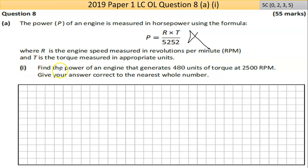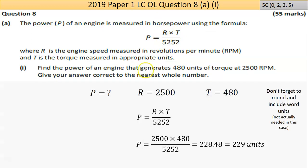Part 1 says find the power of an engine that generates 480 units of torque at 2500 RPM. So you're given these two numbers. In the workings here I've been very pedantic, I've shown all three unknowns and written in the two pieces of information I have, written out the formula, substituted in the information I have, put it through the calculator.